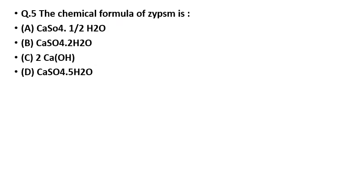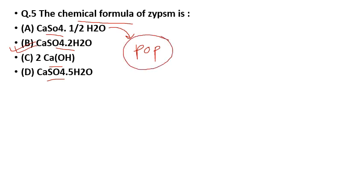Question number 5: The chemical formula of gypsum. The options are CaSO4 half hydrated water, CaSO4·2H2O, 2Ca(OH), and CaSO4·5H2O. The correct answer is CaSO4·2H2O. Also remember: if asked for Plaster of Paris (POP), its formula is CaSO4 with half water of crystallization, whereas gypsum has a full 2H2O. Keep this in mind.